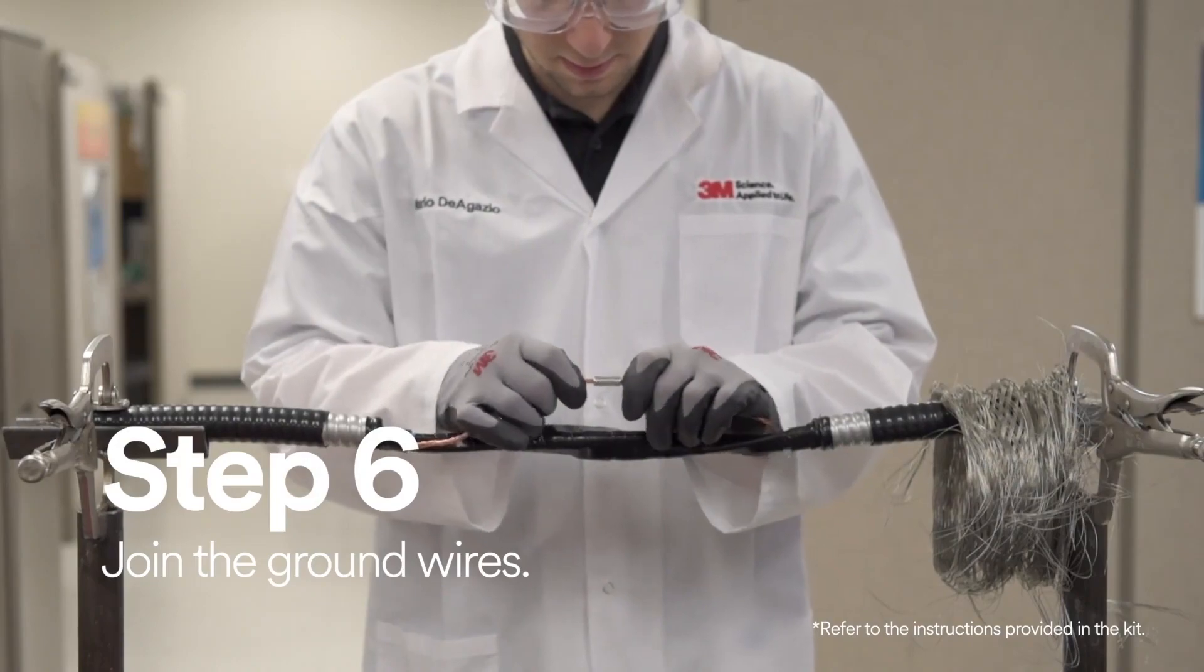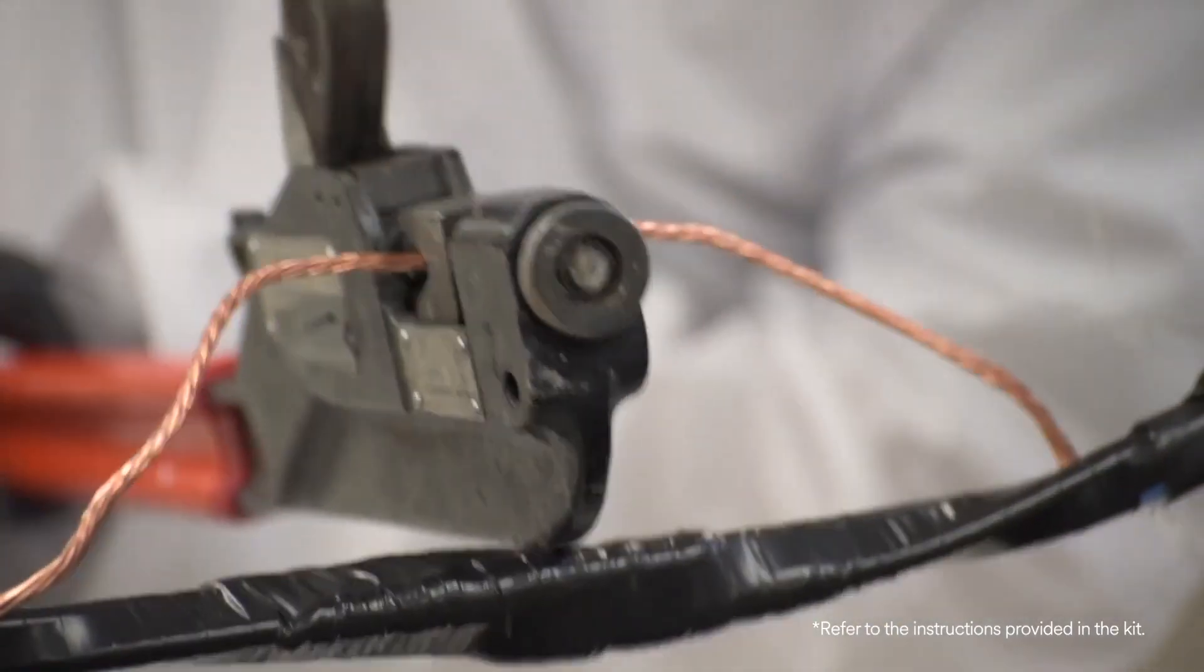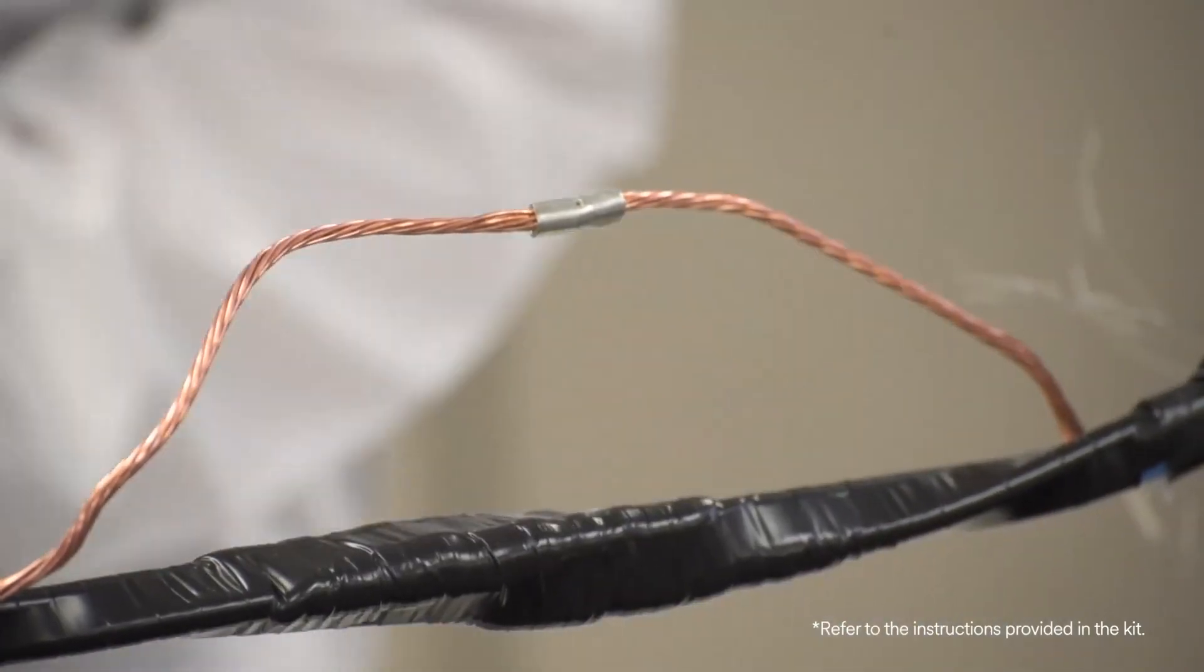After you've insulated the connectors, you have to join the ground wires. Make sure you're using a proper sized connector and crimping tool or die.